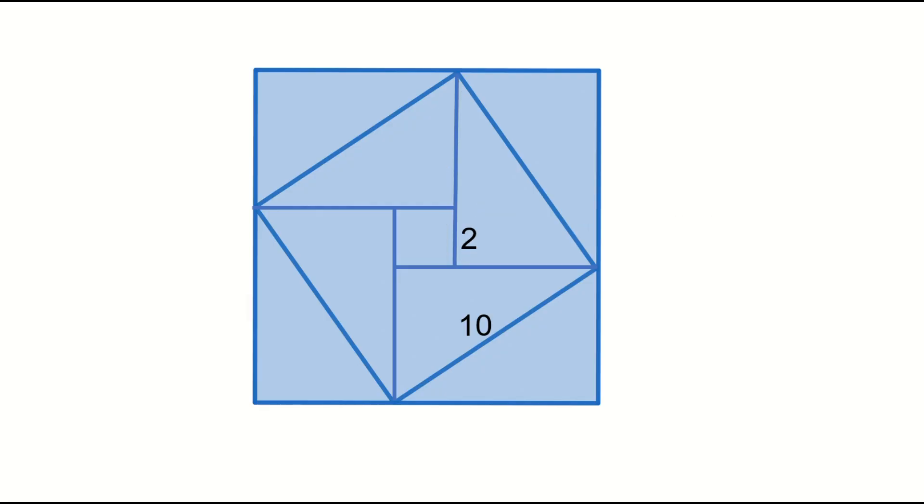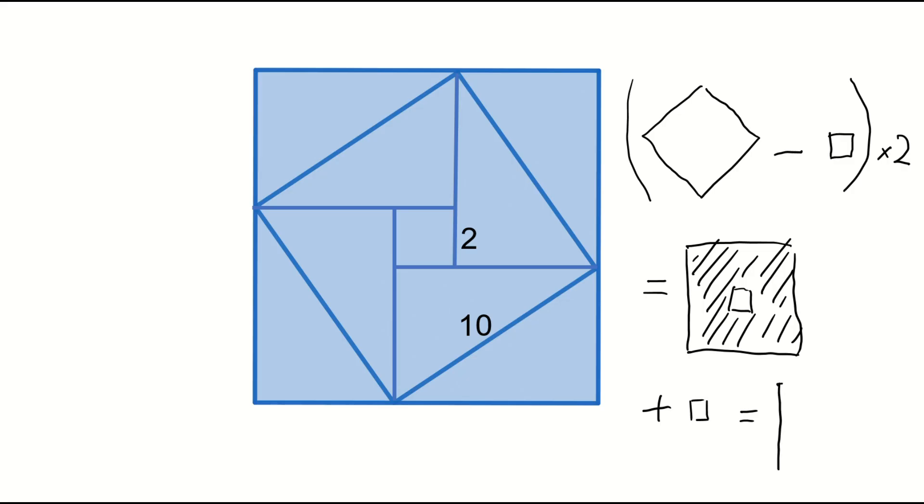At this stage, the answer is easy to see. The area of the larger square can be calculated as follows: subtract the area of the small square from the area of the medium square, multiply it by 2, and then add the area of the small square to get the area of the large square.